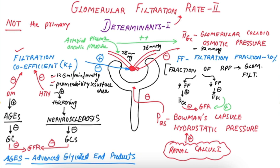In summary, the filtration coefficient is adversely affected by diabetes mellitus and hypertension. Bowman's capsule hydrostatic pressure is increased by renal calculi. The glomerular colloid osmotic pressure is affected by the arterial colloid osmotic pressure and the filtration fraction — an increase in filtration fraction increases glomerular colloid osmotic pressure and decreases GFR, while a decrease in filtration fraction decreases glomerular colloid osmotic pressure and increases GFR. Please remember that none of these are the primary determinants of GFR.